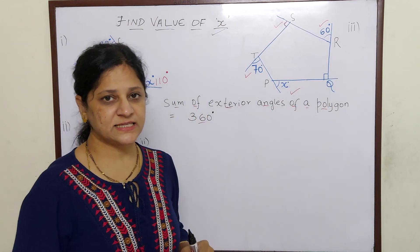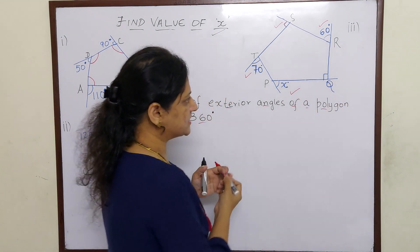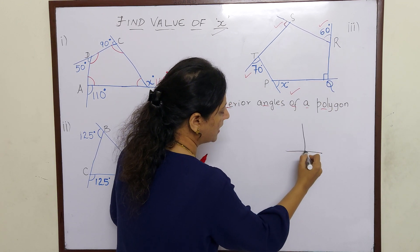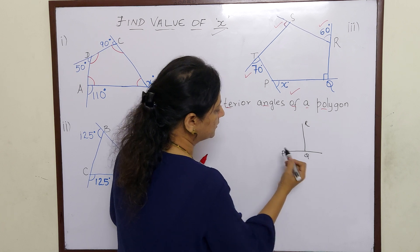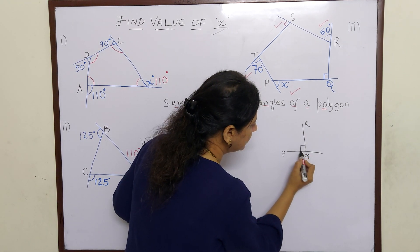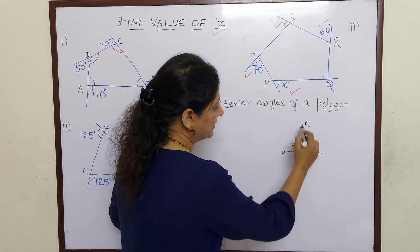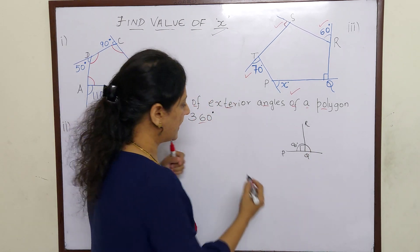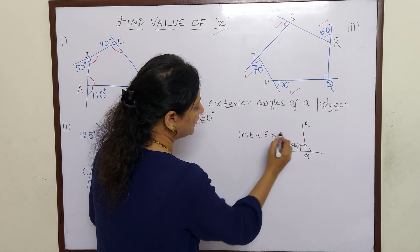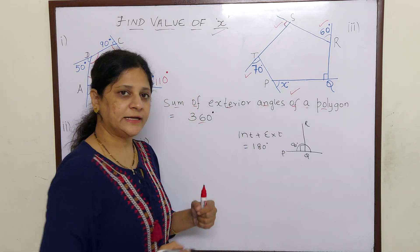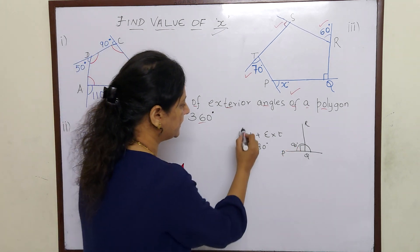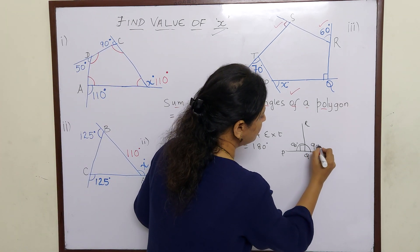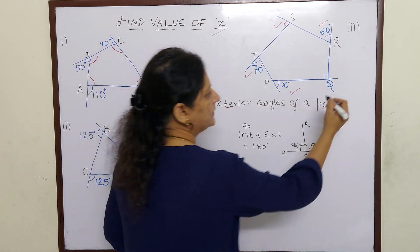That means first we have to find out what the 5th exterior angle is. Now if you see, PQ is a line segment and RQ is a ray standing on it. Whenever there is a line and a ray stands on it, they form a linear pair: interior angle plus exterior angle will always equal 180 degrees. The interior angle here is 90 degrees, so the exterior angle is 180 minus 90, which is also 90 degrees.